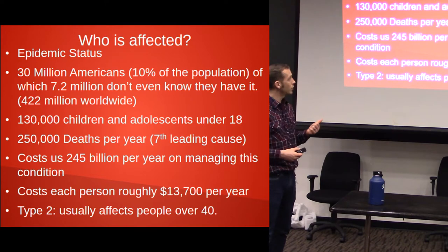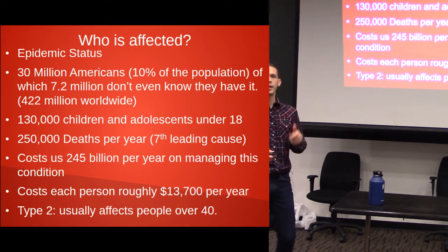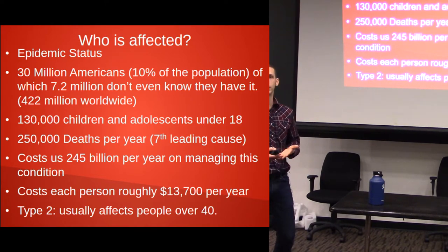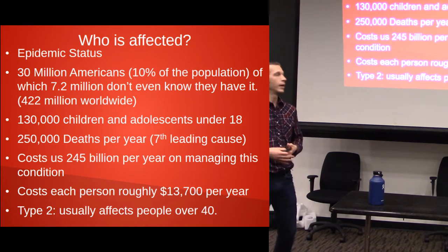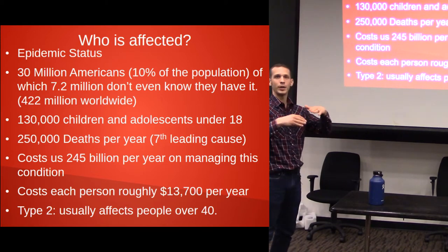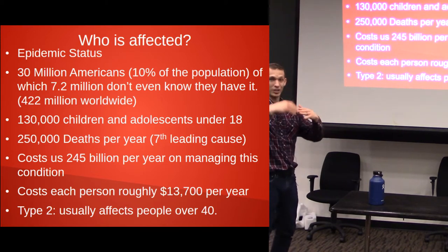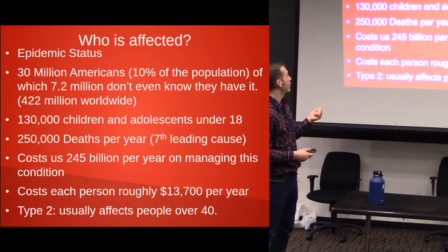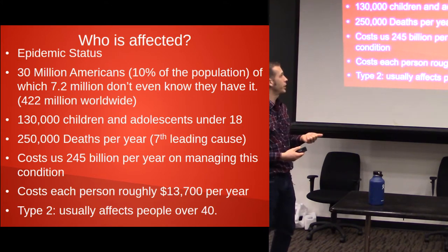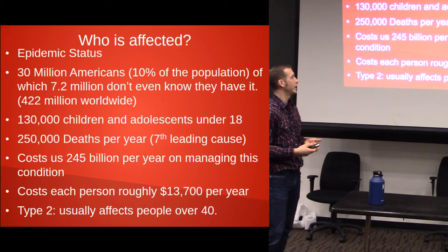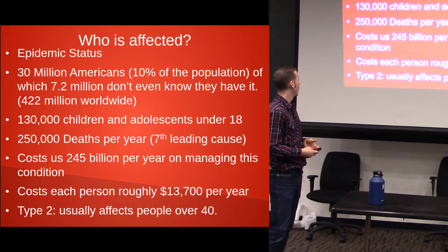130,000 children and adolescents under the age of 18 — a lot of even kids are starting to get it. I'll talk about the difference between type 1 and type 2 and how that has changed a lot. 250,000 deaths per year, and I think that's just in America. It's the seventh leading cause of deaths.